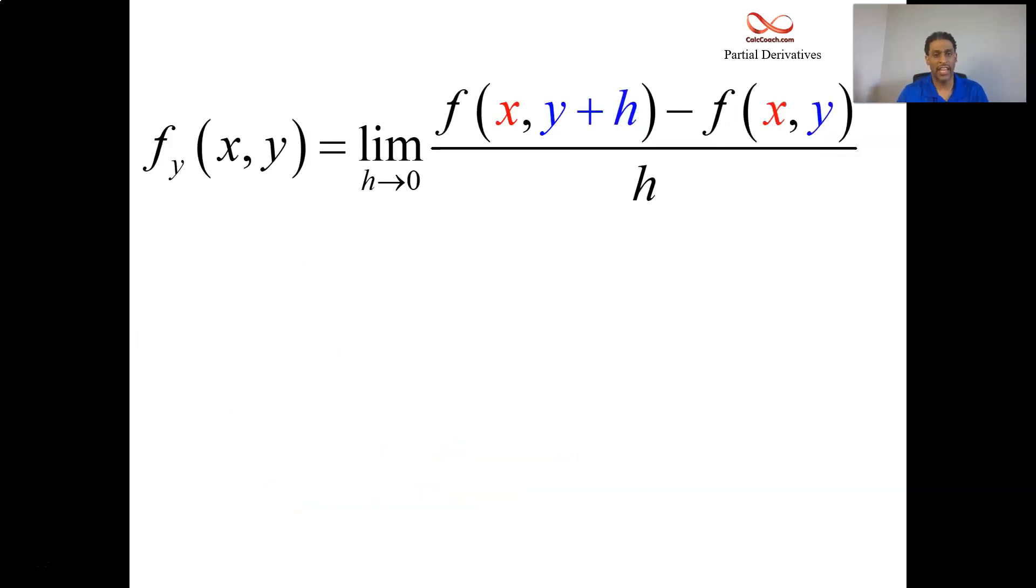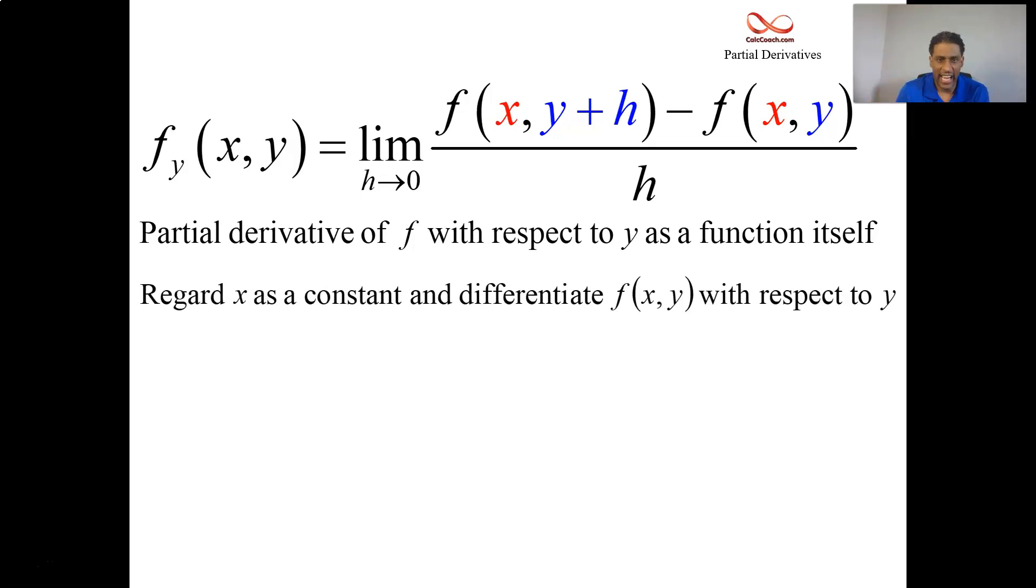Now the definition has f(y+h) - f(y) all over h, and the x is there, just treated as a constant. It's called the partial derivative of f with respect to y. It's a function itself. You're going to regard x like a constant, differentiate with respect to y.